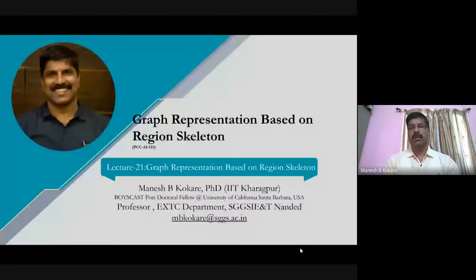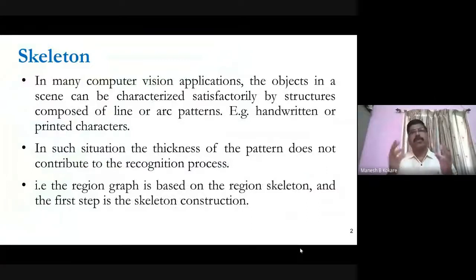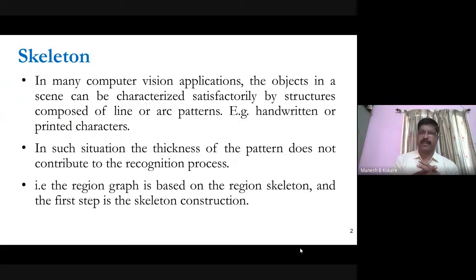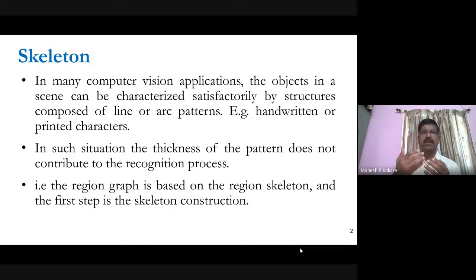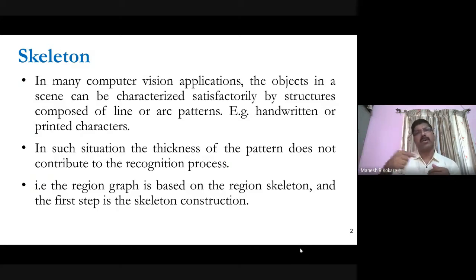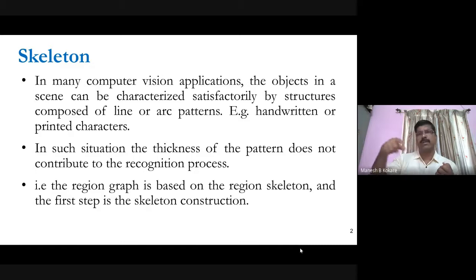In many computer vision applications, objects in a scene can be characterized satisfactorily by a structure composed of lines or arc patterns — for example, handwritten or printed characters. The basic features in computer vision are texture, color, and shape, but shape is the most important. Shape consists of edges, which can be straight lines, arcs, or circular patterns, as seen in handwritten characters.